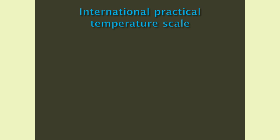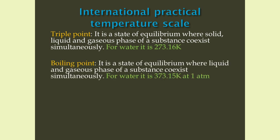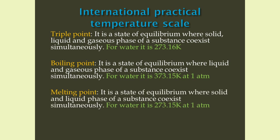International practical temperature scale. It consists of some reference temperatures like triple point, boiling point and melting point, and is formulated to calibrate temperature measuring instruments. The triple point is a state of equilibrium where solid, liquid and gaseous phases of a substance coexist simultaneously — for water, it is 273.16 Kelvin. The boiling point is a state of equilibrium where liquid and gaseous phases coexist simultaneously — for water, it is 373.15 Kelvin at 1 atm. The melting point is a state of equilibrium where solid and liquid phases coexist simultaneously — for water, it is 273.15 Kelvin at 1 atm.